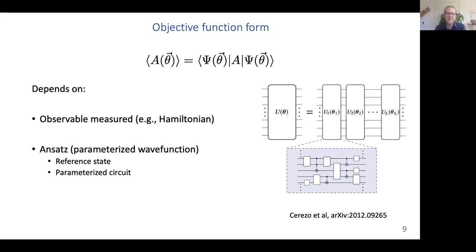The cost function depends on two things: first, the observable A measured — which could be the Hamiltonian of some quantum mechanical system — and then also the ansatz, the parameterized wave function. The ansatz is composed of two parts. One begins with a particular reference state, which may be the all-zero computational basis state, the all-plus state, or something inspired by the problem such as the Hartree-Fock or mean-field ground state solution determinable classically. Acting on this reference state, one has a parameterized circuit that defines the full ansatz wave function.